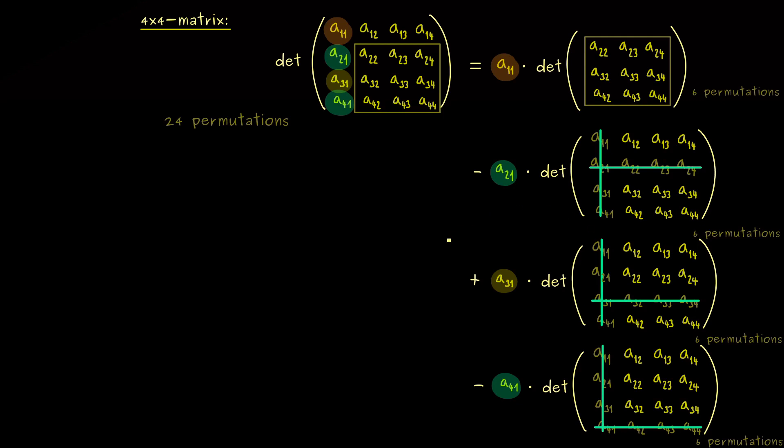Indeed, it's easy to check, just pick an even permutation here in the 3×3 matrix and simply check if it's also an even permutation in the original 4×4 matrix. And then you should see, alternating, we have to flip the sign.